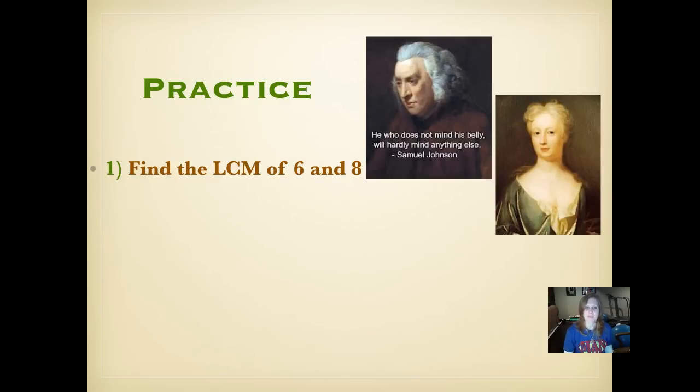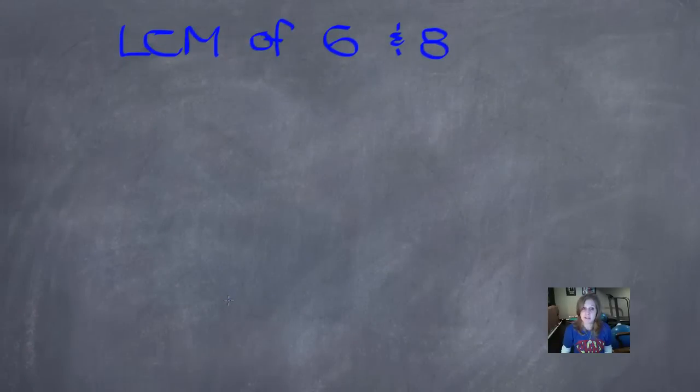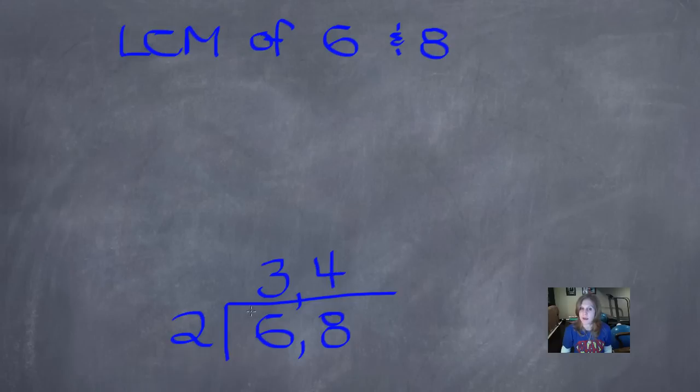Now for number 1, we're going to find the LCM of 6 and 8. Remember, you can look back at your example if you need some help remembering what to do. Pause it and push play when you're ready. Did you write 24? Let's see how we did that. So to find the LCM of 6 and 8, we're going to make a cake and write 6 and 8 in the bottom layer of our cake. And ask ourselves what number will divide evenly into both 6 and 8. They're both even numbers, so I'm going to put 2. 2 goes into 6 three times, comma. 2 goes into 8 four times.